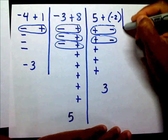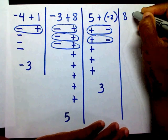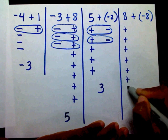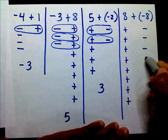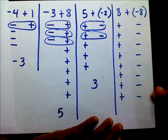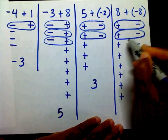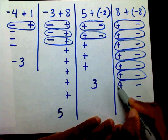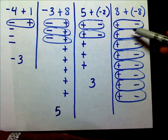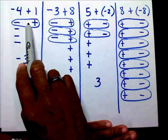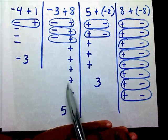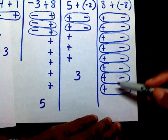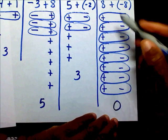The last one: eight plus negative eight. I have eight positives and I want to add eight negatives. I want to create my zeros — here's a zero, here's a zero, here's a zero, here's a zero, here's a zero, here's a zero, here's a zero, here's a zero. If you notice in this problem, you have nothing left over. So the answer is going to be zero. Eight plus negative eight is zero.